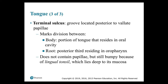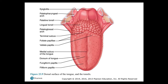The body is the portion of the tongue residing in the oral cavity, whereas the root is the posterior third residing in the oropharynx. This section does not contain papillae, but is still bumpy because of the lingual tonsil, which lies deep to its mucosa. Figure 23.9 shows the dorsal surface of the tongue and tonsils. From the back: the lingual tonsil, the terminal sulcus, foliate papillae, fungiform papillae, and filiform papillae. The medial sulcus divides the tongue into right and left aspects.